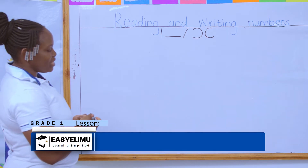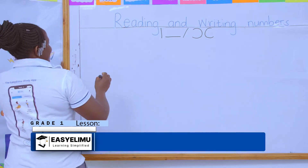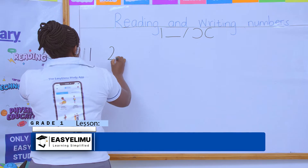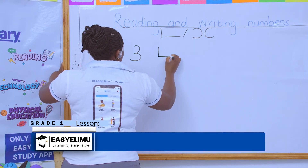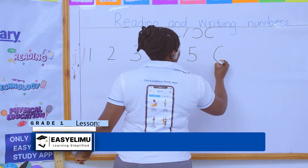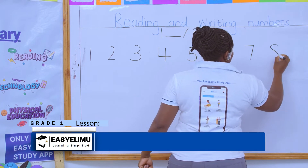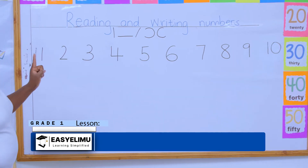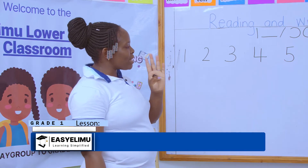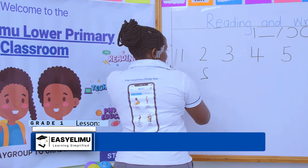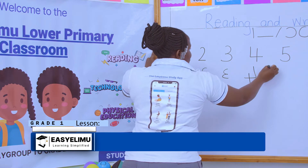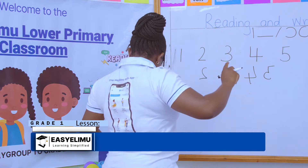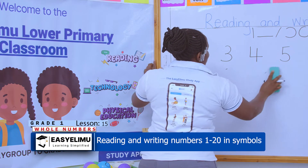Someone can come and write numbers 1 to 10 the way we did it last time. So the numbers were written on the board: 1, 2, 3, 4, 5, 6, 7, 8, 9, and 10. When you're looking at these numbers, be very careful — you must know the direction in which the number is supposed to look and go. Don't write 2 like this, don't write 3 like this, don't write 4 like this, 5 like this. Look at the numbers the way they're supposed to look and where they're supposed to face. Make sure you follow that.